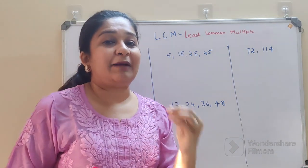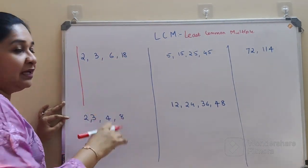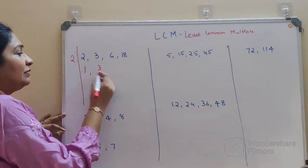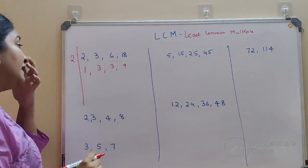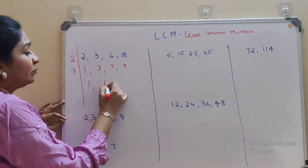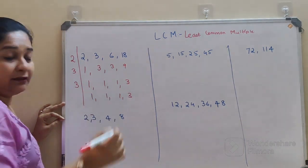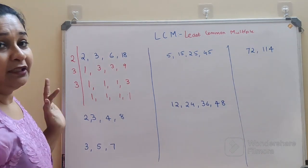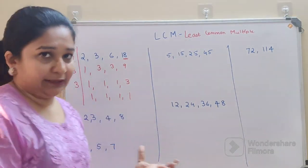When you have to find LCM, the traditional method is superb, but in entrance exams you don't get that much time. The traditional method is where you put a tree and start with the lowest number. You keep dividing until you get all ones. For example: 2 divides, giving 1, 3, 9. Then divide by 3: 1, 1, 1, 3. Divide by 3 again: 1, 1, 1, 1. Your LCM is the multiplication of all divisors: 2 × 3 × 3 = 18.